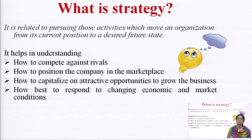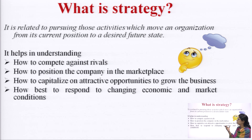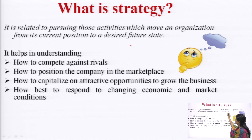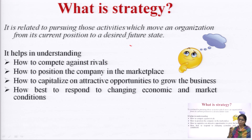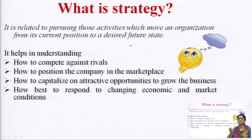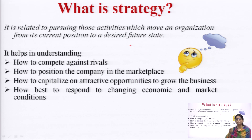Strategy is doing differently what your competitors cannot do. If you can do something your competitor is not able to do, it means you are going to have success for a longer period of time. Strategy is related to pursuing those activities which move an organization from its current position to a desired future state. It is basically a plan of action that gives you direction — telling you about your vision, mission, objectives, and goals. Without strategy, we cannot survive in this competitive world.